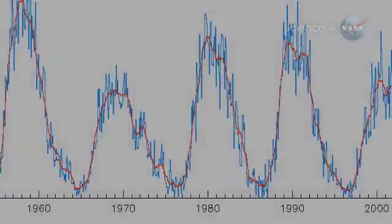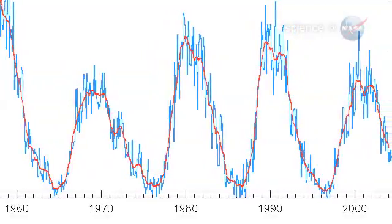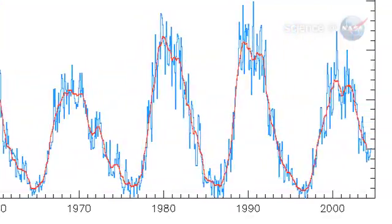Quiet spells on the Sun are nothing new. They come along every 11 years or so. It's a natural part of the solar cycle.